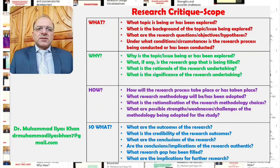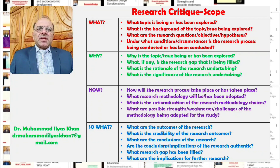For example, in social sciences, if a researcher has adopted quantitative research designs, they need to justify that. If they have used qualitative research designs, they need to justify that. And if they have used mixed method research designs, they need to have a rationale for that. Additionally, what are the strengths, weaknesses, or challenges of the methodology adopted? Every methodology and every research design has certain strengths and weaknesses, and researchers need to describe those for the methodological choices they have made.